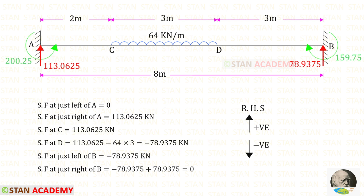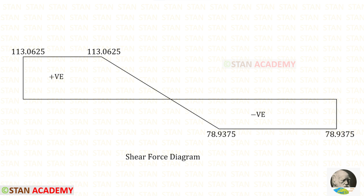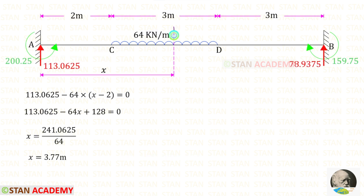Now let us find the shear force values starting from point A, using the right-hand side rule where upward is positive and downward is negative. We can find all shear force values and plot the shear force diagram. At the point where shear force becomes zero, there will be a maximum positive bending moment. Making a section at distance x from point A, using the shear force equation with VA upward (positive) and the UDL downward (negative) over distance (x minus 2), we find x = 3.77 meters.